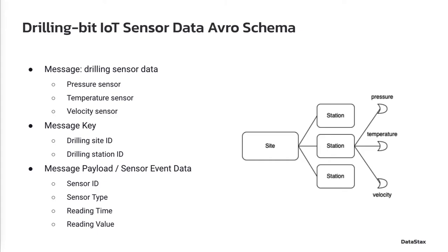The diagram on this page illustrates a simplified scenario for IoT sensor data collection for an oil and gas drilling site. One drilling site has multiple stations, and one station has several types of sensors to collect data continuously. We want to use Pulsar as the underlying messaging and streaming platform for this sensor data, where each Pulsar message represents one single recording of a particular sensor at a specific station.